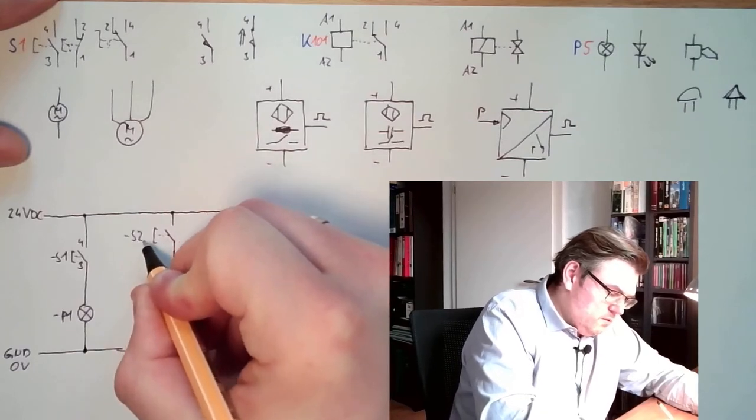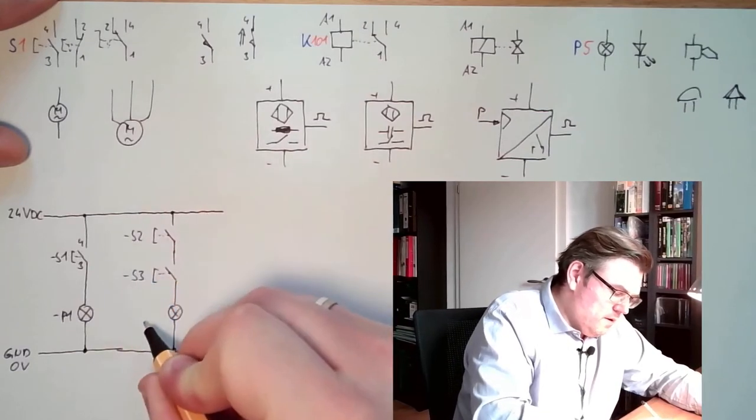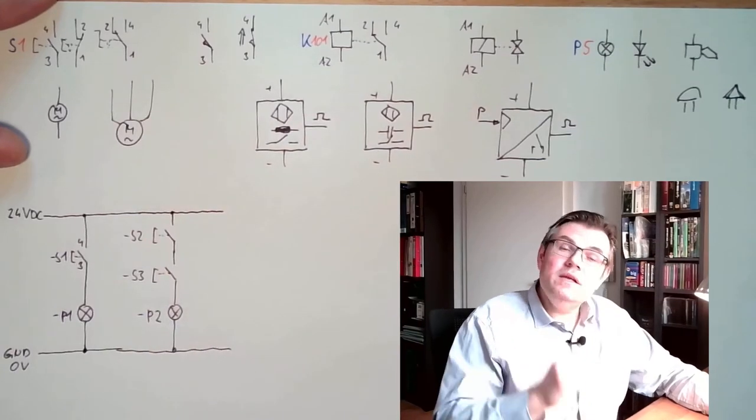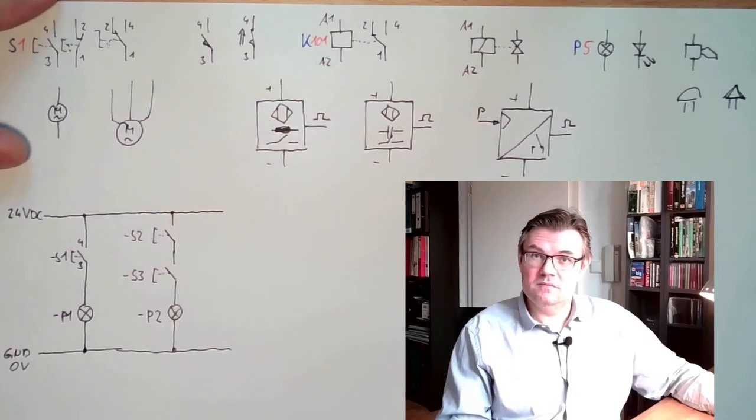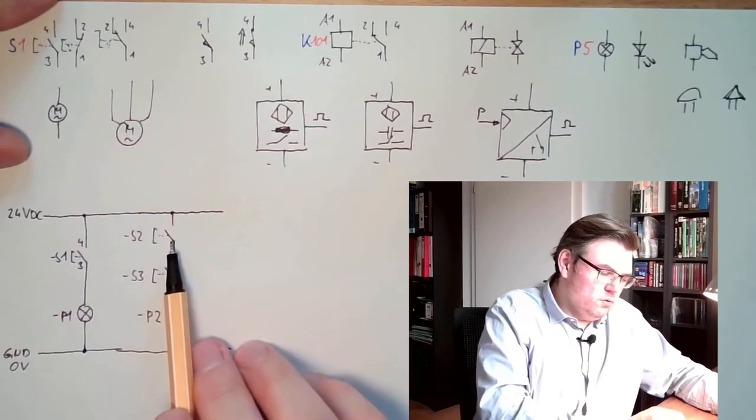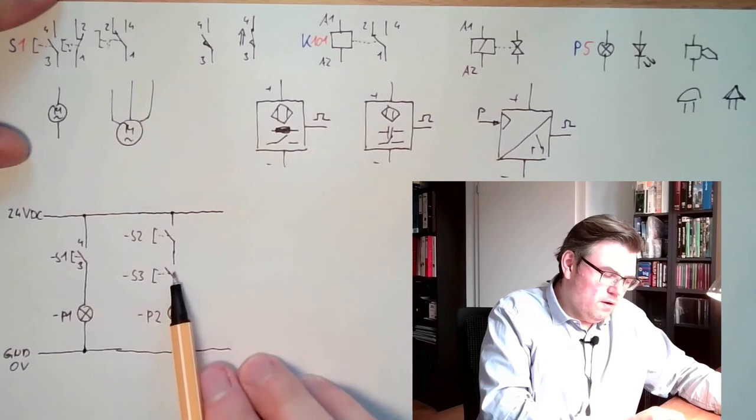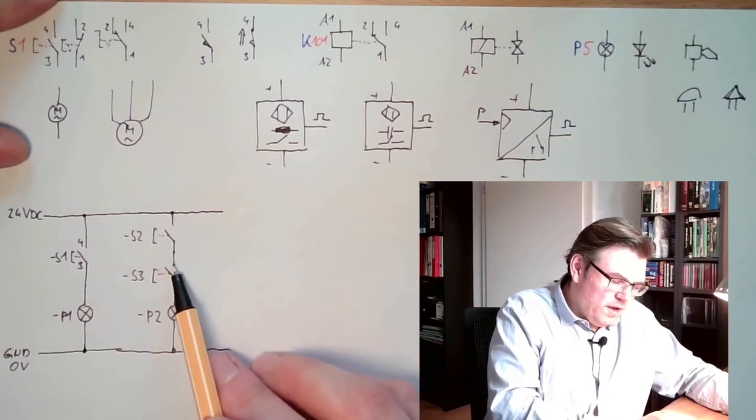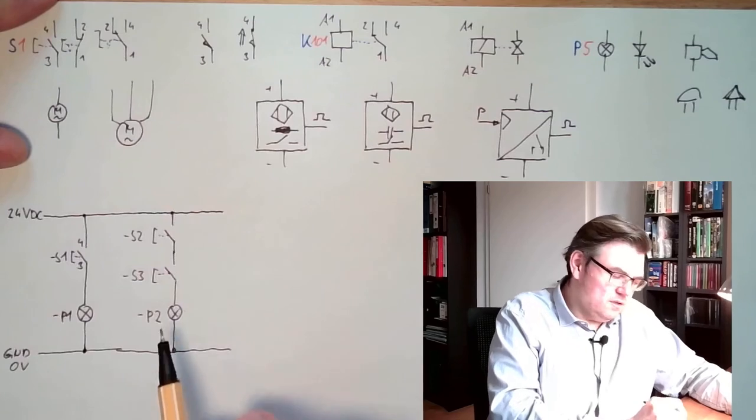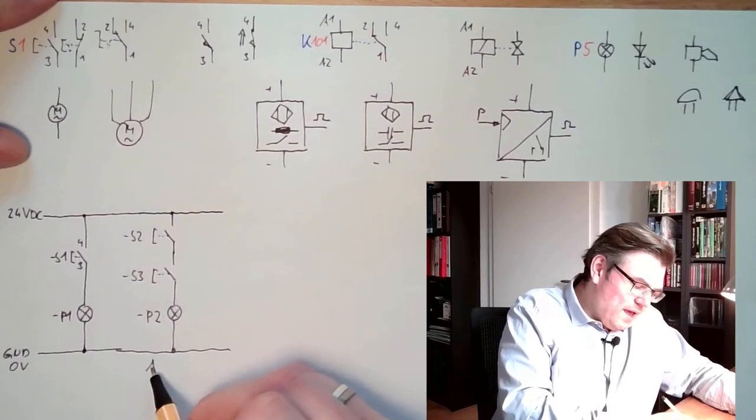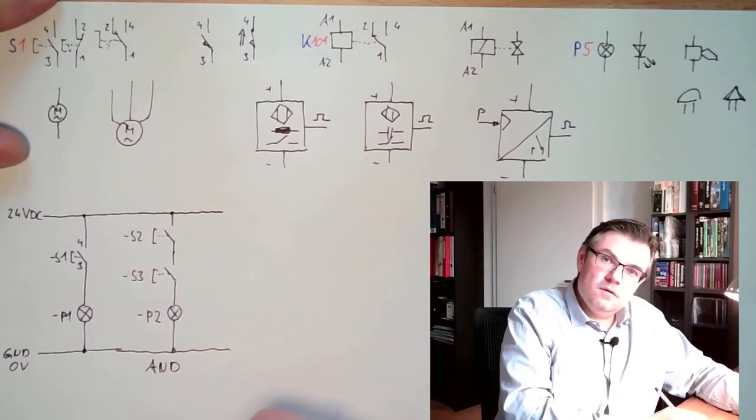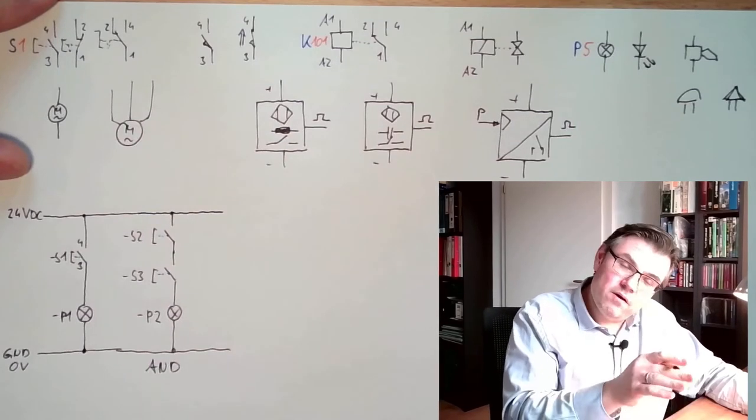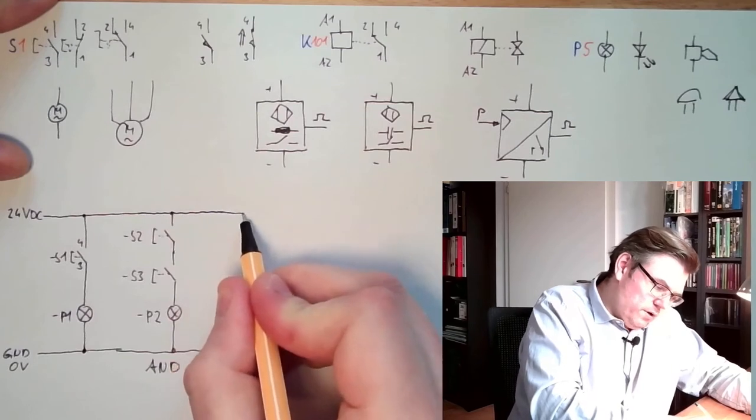Now, let's see if we do it like this. Here we have S2, we have S3. Here we have P2. What needs to happen that P2 is lit? I have to press S2. Then the current is coming to here, but here is still open. I have to press S3 also, that will get a connection. And now P2 is lit. So, this is an AND operation. I can make an AND with my contacts. It's already good.